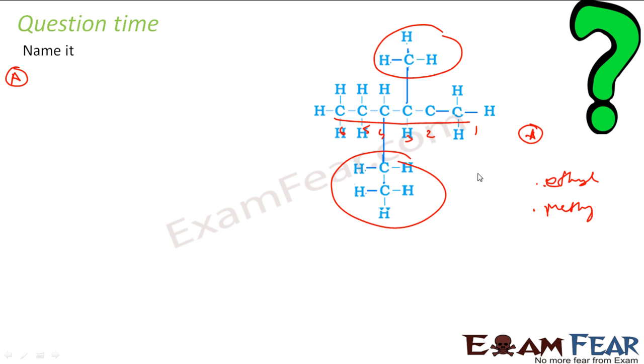So ethyl is which position? Ethyl is four. So it is four ethyl. Methyl is third position. Three methyl. And five, six, hexane. That is my one option.